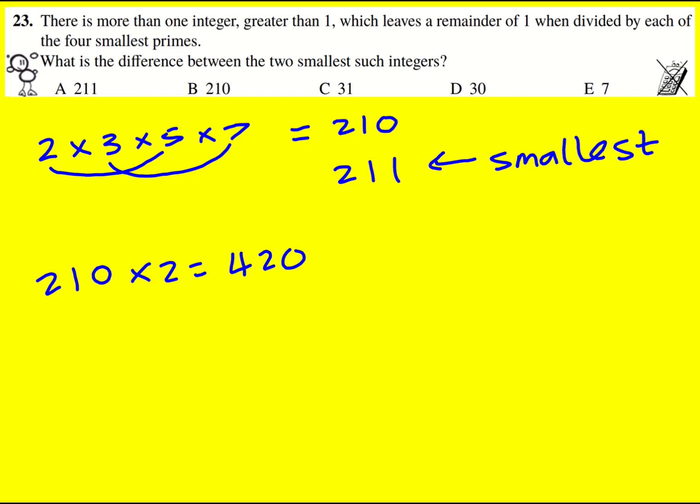There's not going to be any in between, and so if I want to know one that will then leave a remainder of 1, I can just add 1 to it, so 421.